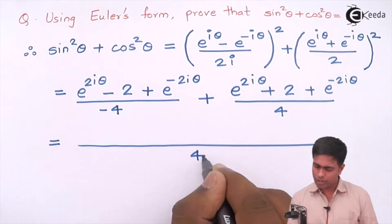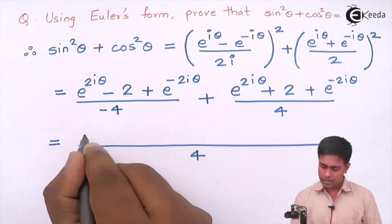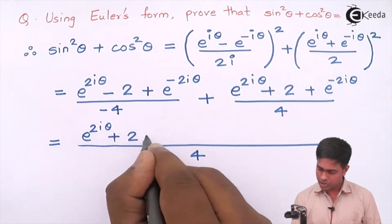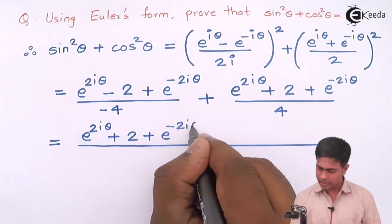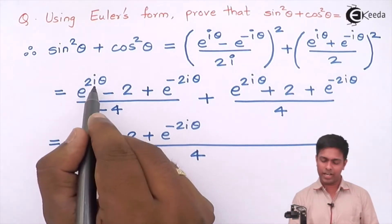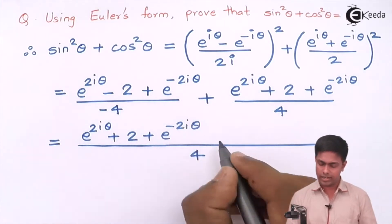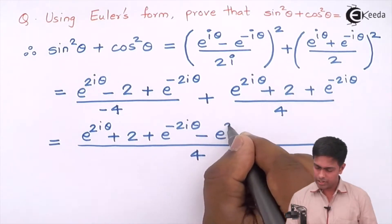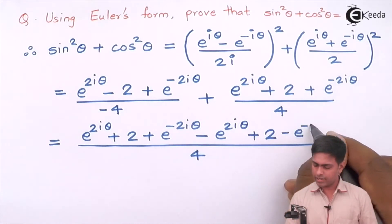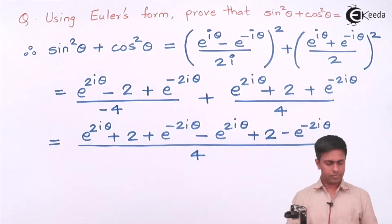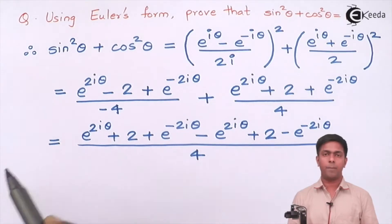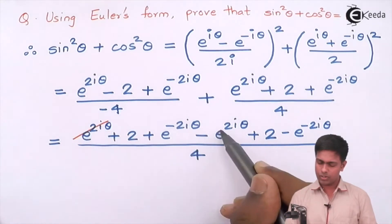So whenever we have same denominator and we are doing addition we write it only once. So these terms are positive: e raised to 2i theta plus 2 plus e raised to minus 2i theta. And as I have taken this negative sign in the numerator, these all terms will become negative: minus e raised to 2i theta plus 2 minus e raised to minus 2i theta.